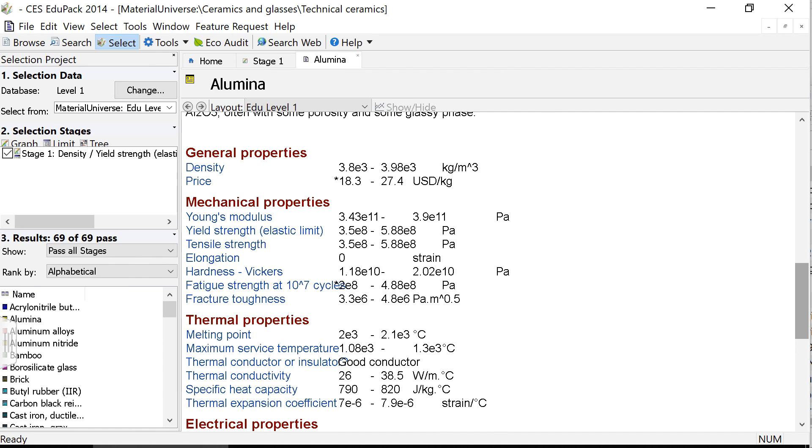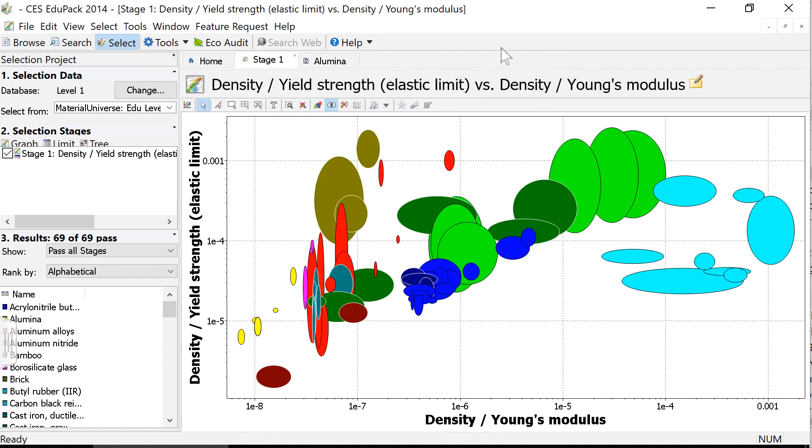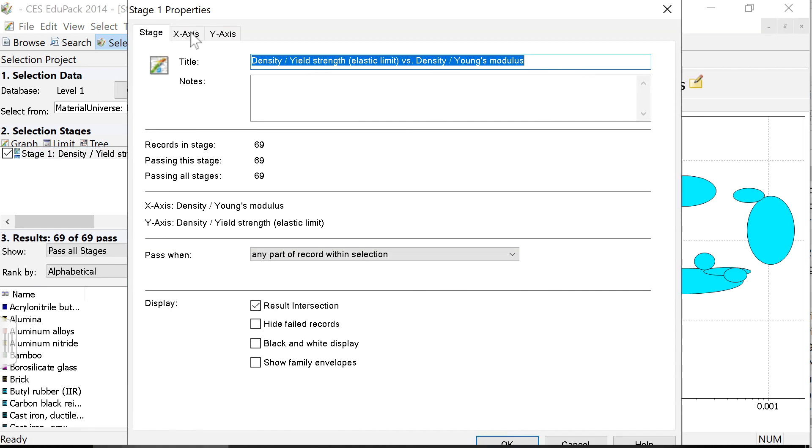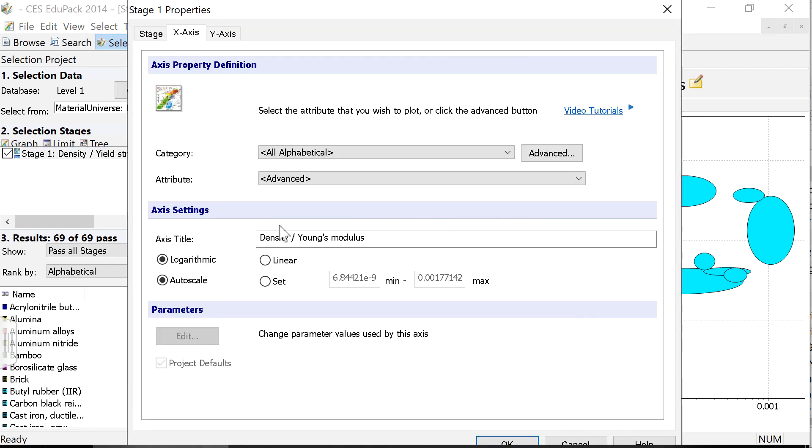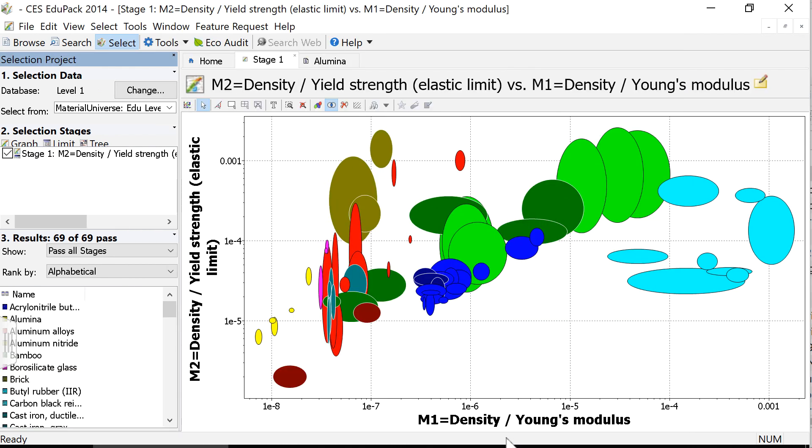So now I go back to my graph. On my graph, the first thing I'll do is I'm going to edit my axes. So I'm just going to right-click on the stage, Edit Stage, and I'm just going to add a label that my x-axis, that is M1, and my y-axis, that is M2. I'm simply doing this for ease of bookkeeping so that I can try and keep track of which properties are in which axes.